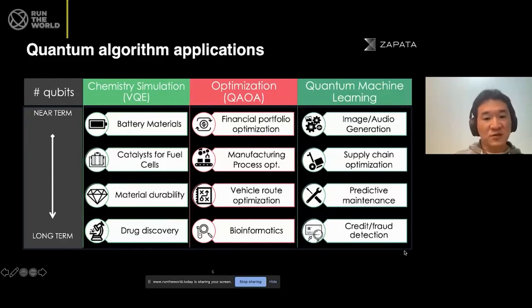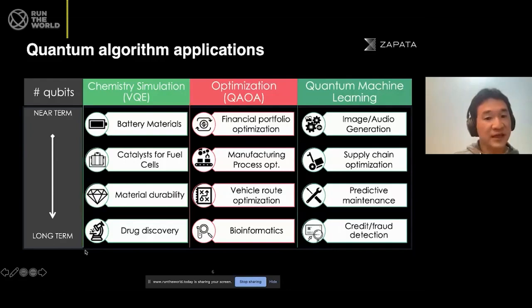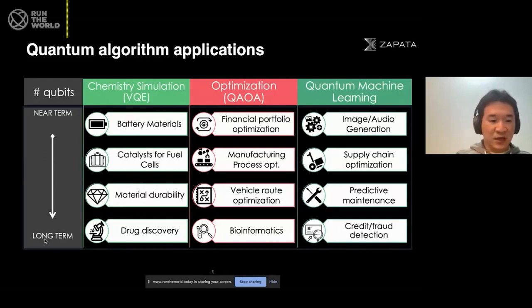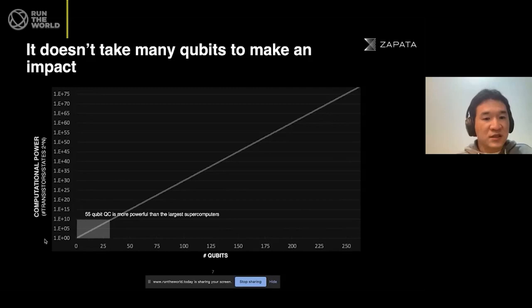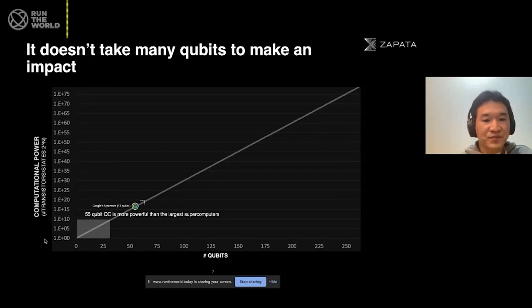And in the long term, there are many others that really matter to our lives. For example, drug discovery — especially these days with the pandemic. Think about a day when it may only take a month to invent a vaccine, whereas we had to spend like a year after the COVID pandemic broke. Quantum computers can really help discover new methods. And it doesn't really take many qubits to make an impact — a 55-qubit quantum computer is actually more powerful than the largest supercomputers we have.